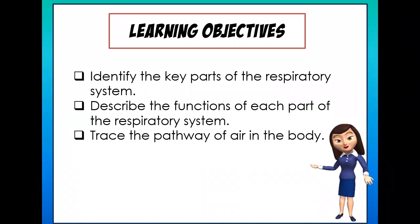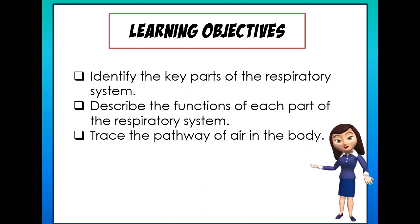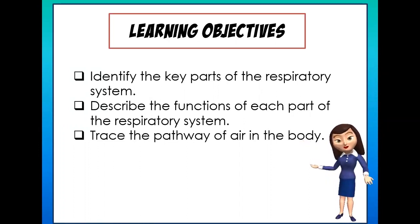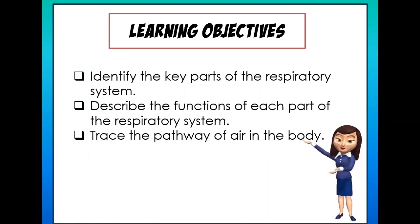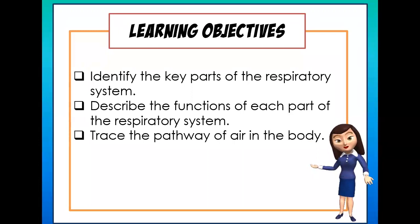First, identify the key parts of the respiratory system. Second, describe the functions of each part of the respiratory system. And third, trace the pathway of air in the body. Now the learning objectives will give us an idea about the flow of our discussion.